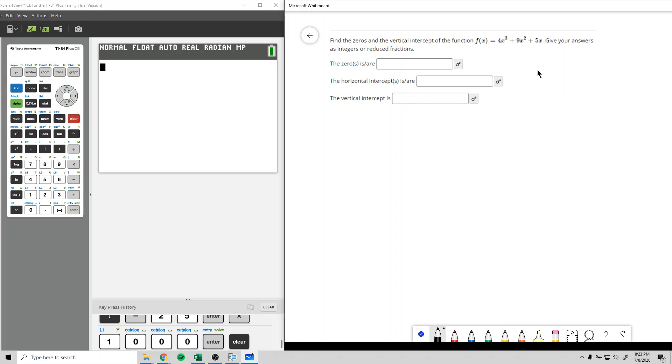So first thing I want to point out, the horizontal intercepts are the same thing as the x-intercepts and the vertical intercept is the same thing as the y-intercept. The horizontal left to right is talking about the x-axis and the y-axis here.